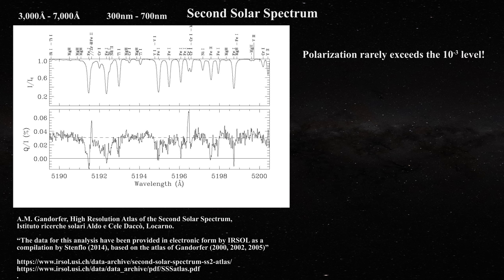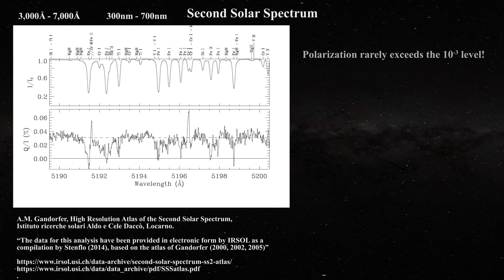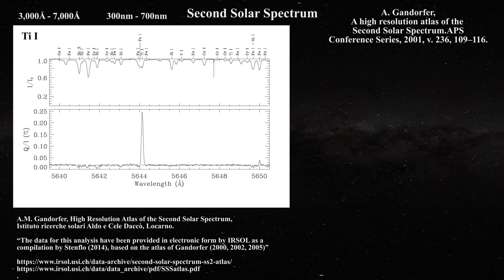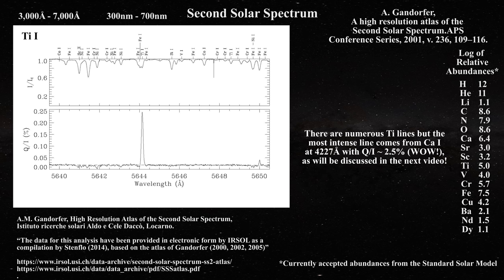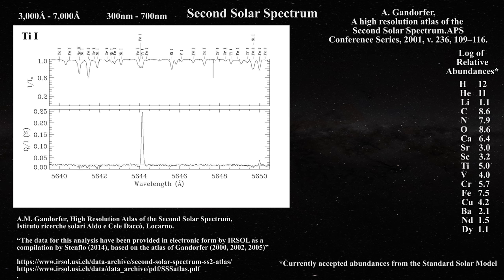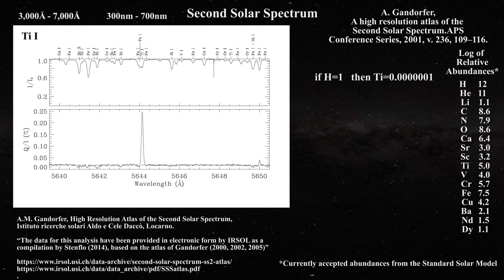There are notable exceptions to the rule that the degree of polarization is on the order of 10^-3. For instance, the most important polarizing atomic lines in the second solar spectrum are produced by titanium-1. That is surprising, because titanium is not one of the most abundant elements in the Sun. Looking at the table of abundances listed logarithmically, hydrogen is most abundant at 12, while titanium is only 5.02 — they differ by 7 orders of magnitude. So if there is one hydrogen atom, there is only 0.0000001 titanium atoms.